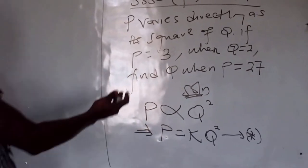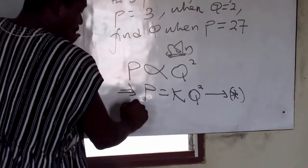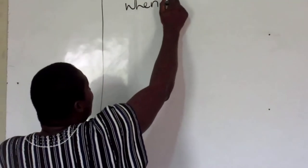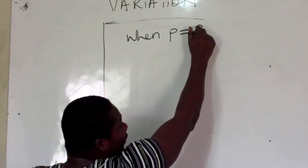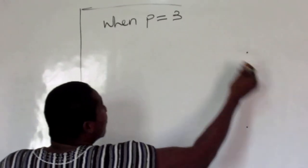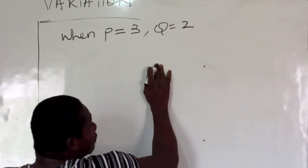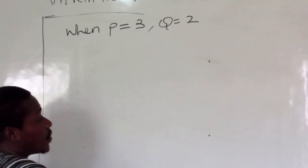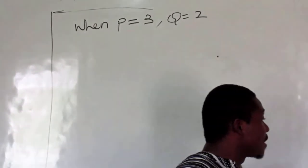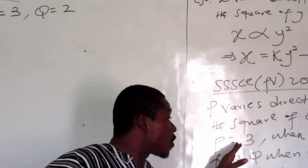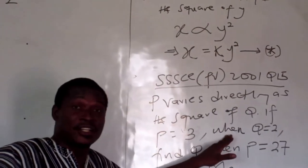So if P varies directly as the square of Q, so that is what we have. So I will introduce my constant of proportionality and label the equation as usual. So when you continue, when P is 3 and Q is 2, so that is the first situation given.